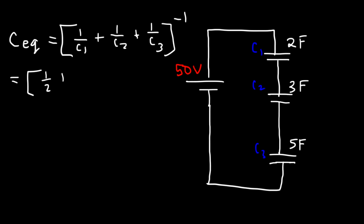So it's 1 over 2 plus 1 over 3 plus 1 over 5, and just type this in exactly the way you see it in your calculator. So the equivalent capacitance is about 0.9677 farads.